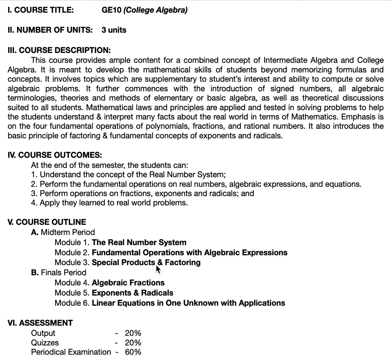The output is simply a worksheet where you need to solve by hand, unlike the quizzes which have multiple choice. Since you have two quizzes, each quiz is 10% of your grade. And we have the periodical exam at 60% — more than half of your grades. The cutoff score is 70%, so if you want to pass, get 70% of the perfect score. That's it for College Algebra.